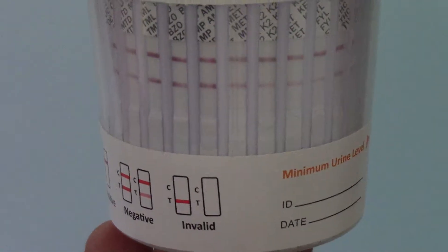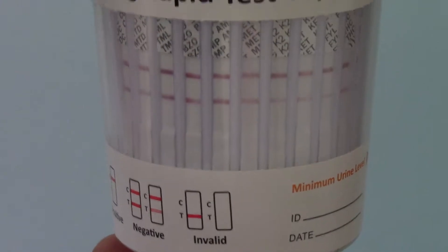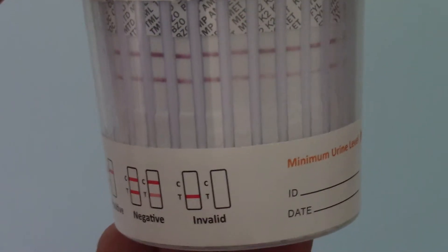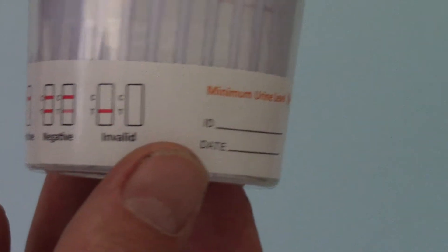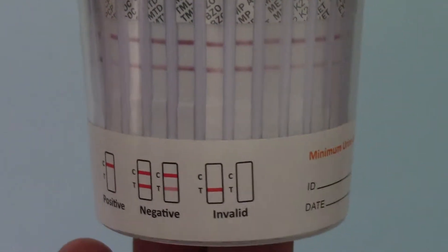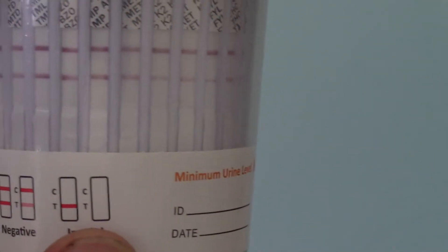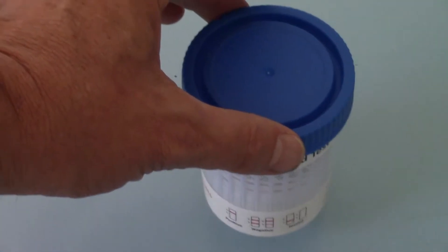That drug group should then be confirmed using a laboratory accredited UCAS certificated method of confirmation, which is a GC-MS or an LC-MS test. So the sample should be sent to the laboratory. They would have a look at what's causing the positive test and give you a certificated report showing the levels of the drug that were detected.